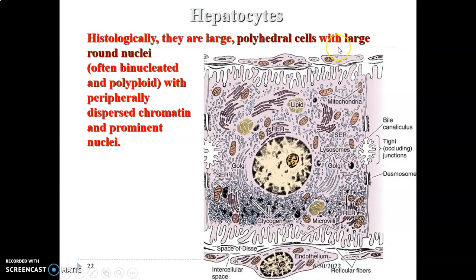What are the functions and histological features of hepatocytes? You need to remember the functions in order to recall the histological features. They are protein synthesizing cells, so they are large polyhedral cells with large and round nuclei, often binucleated and polyploid. The periphery of the nucleus contains dispersed chromatin, and the nucleolus is prominent. So a large nucleus with prominent nucleoli and peripheral chromatin.